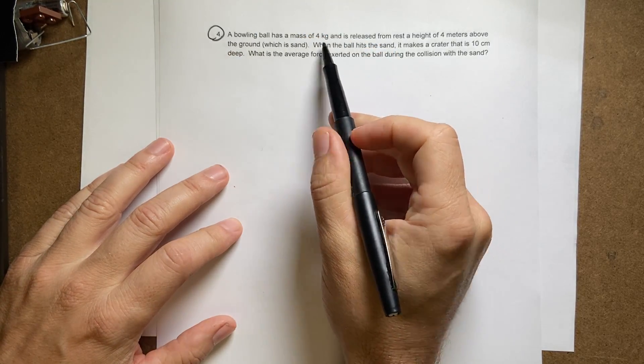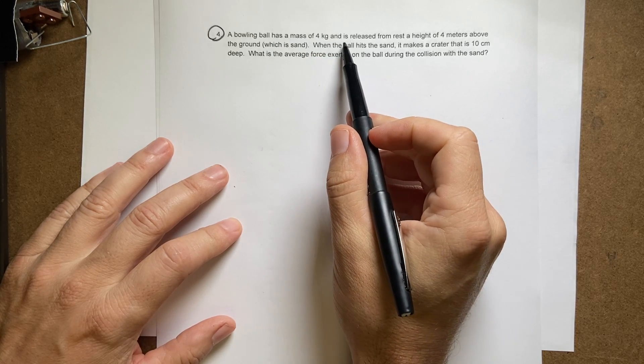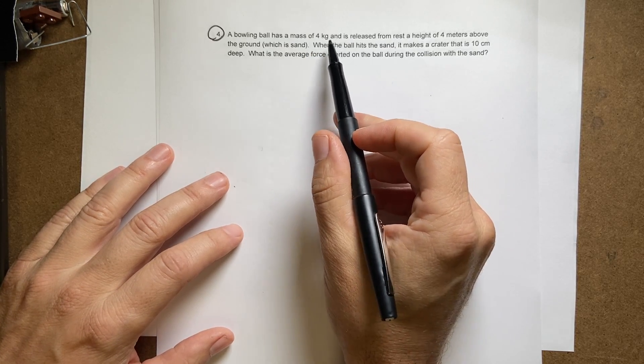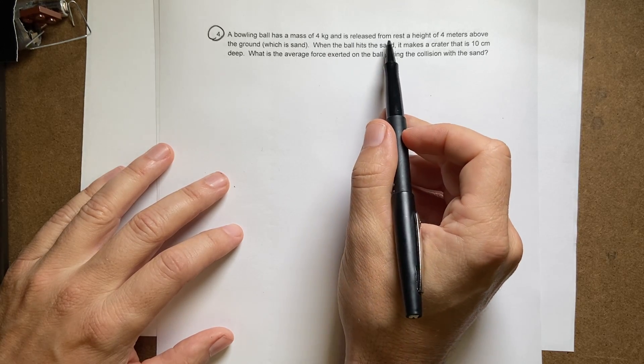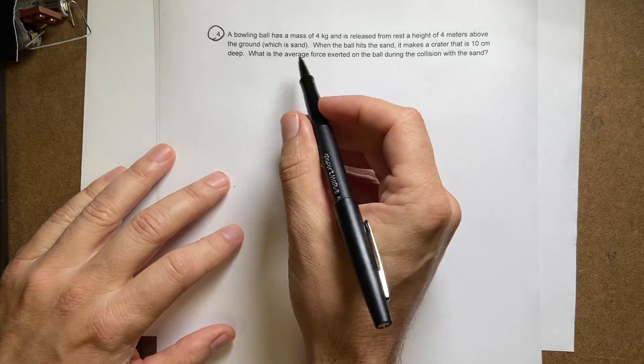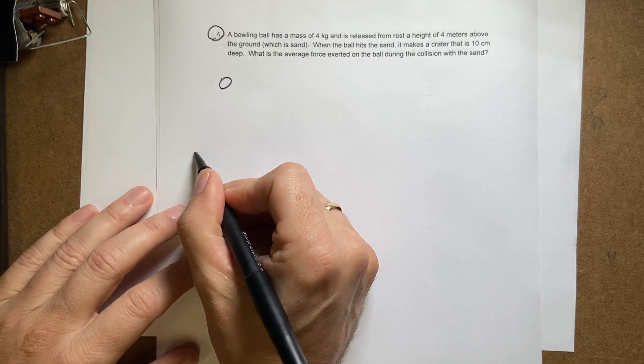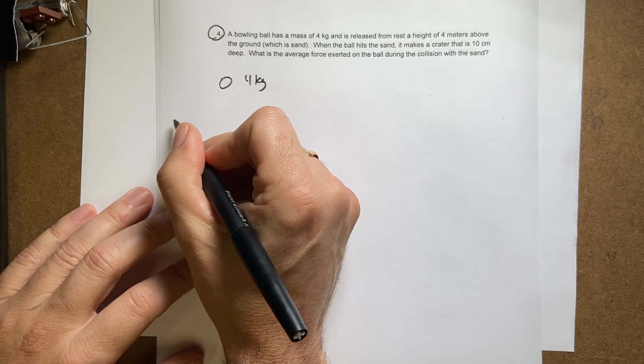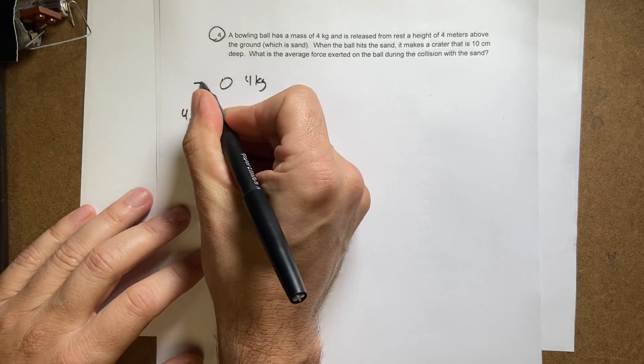A bowling ball of mass of four kilograms is released from rest a height of four meters above the ground, which is sand. So here's my ball. This is four kilograms. This is four meters, like that.